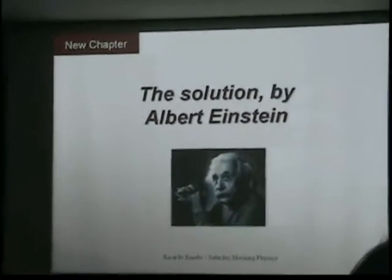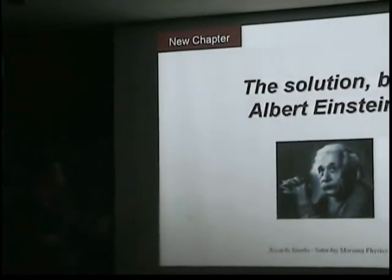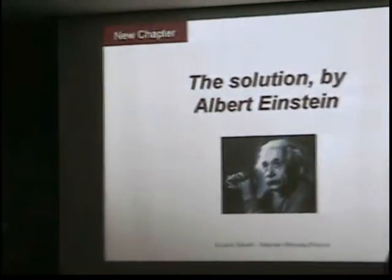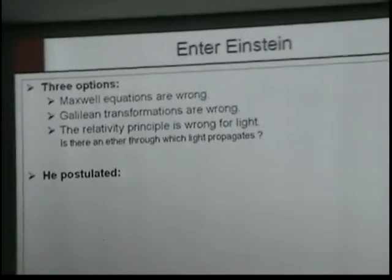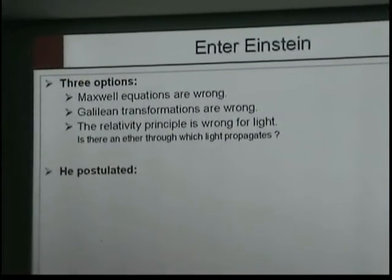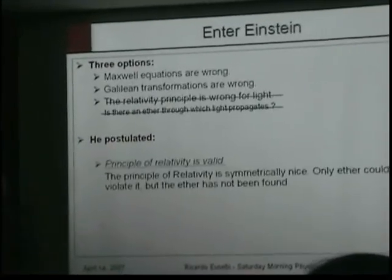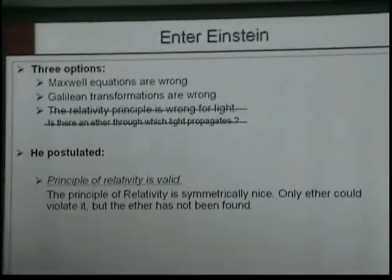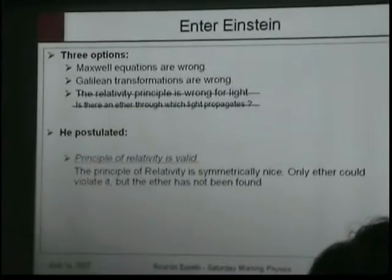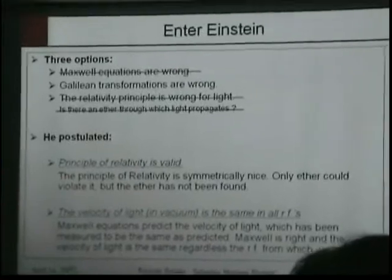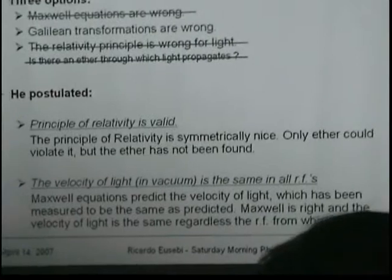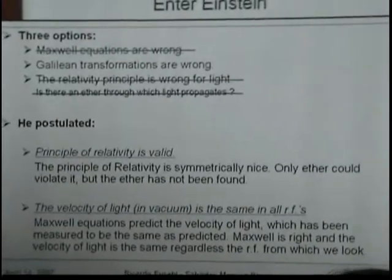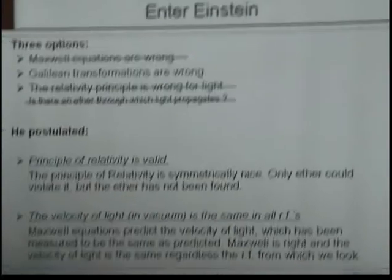So what's the solution? The problem is simply that light is a wave, and waves are not invariant under Galilean transformations. Of the three options — Maxwell's equations wrong, Galilean transformations wrong, or the relativity principle wrong — Einstein said: first, the principle of relativity is valid. It's too symmetric to be wrong, and only an ether could violate it, but no ether has been found. Second, the velocity of light in vacuum is the same in all reference frames, meaning Maxwell's equations are right. Therefore the only option left is that the Galilean transformations are wrong — that x equals x minus vt and t-prime equals t. Those are wrong.